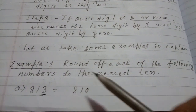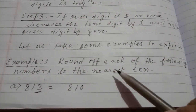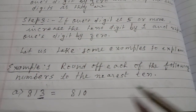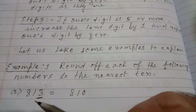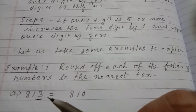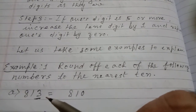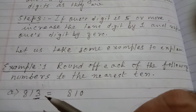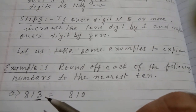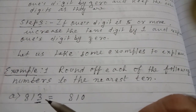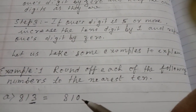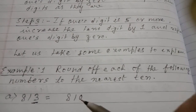Example 1: Round off each of the following numbers to the nearest 10. (a) 813 — In 813, the digit at the 1's place is 3, which is less than 5. So we will replace this digit with 0. It will become 810.